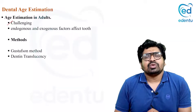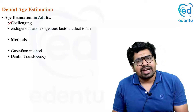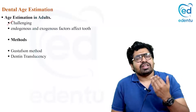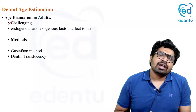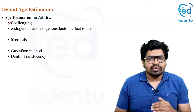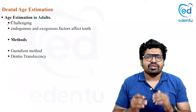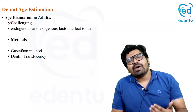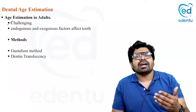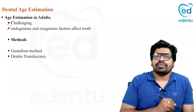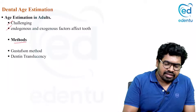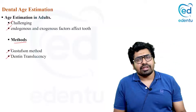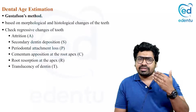In adults, age estimation is very challenging because adult teeth are subjected to wear and tear, trauma, and various habits, placing each tooth in a different state compared to children or adolescents where teeth are still erupting. Due to individual variation in adult dentition, estimation is difficult. The methods used for adults are the Gustafson method and the dentin translucency method.